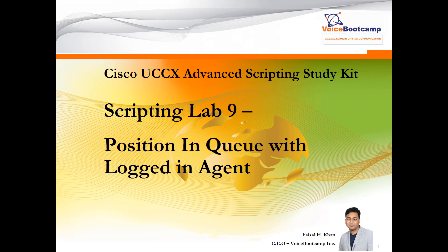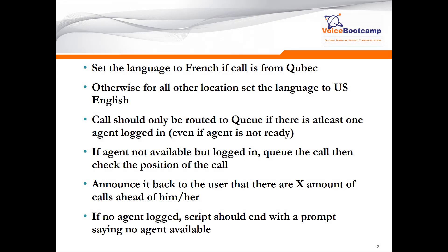This script has a little twist: we must set the language if the call comes from a particular area, otherwise for any other location the call should be set to English. The call should only be routed to the queue if there is at least one agent logged in, even if the agent is not ready. If the agent is not available but is logged in, queue the call, check the position, and announce it back to the user — how many calls are ahead of them. If no agent is logged in, the script should end with a prompt saying 'no agent available.'